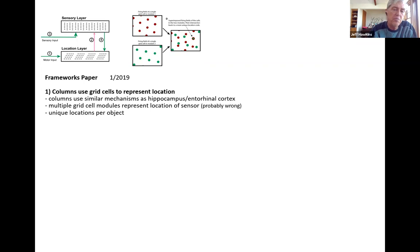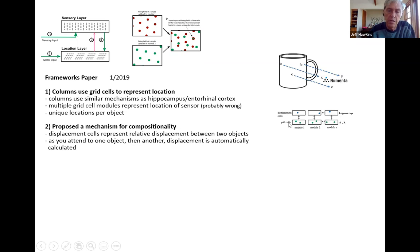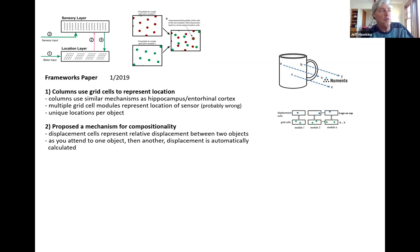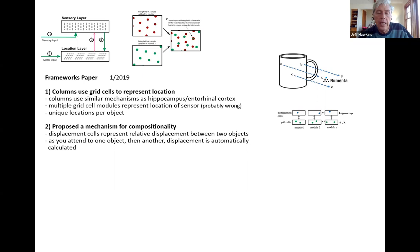We now believe the multiple grid cell modules proposal is probably wrong — we'll get into that in a moment. The representation formed was interesting: with multiple grid cell modules, every location was unique. There wasn't a common location that applied to every object — the neural representation for location was unique for each object and location combined. There were really cool things that came out of that.